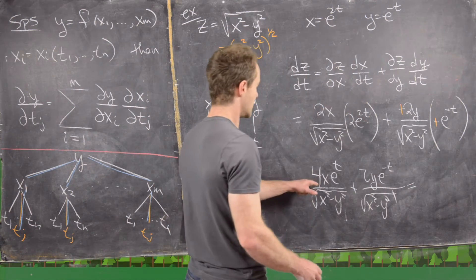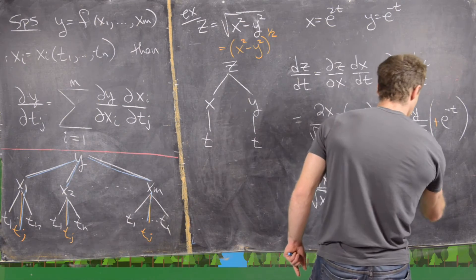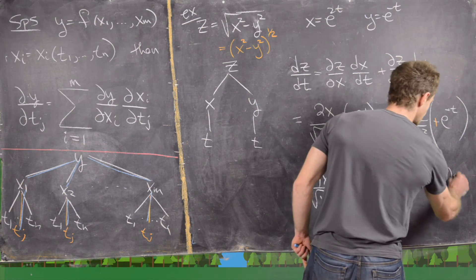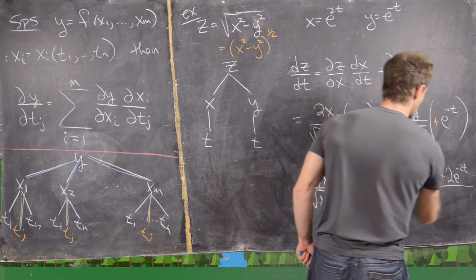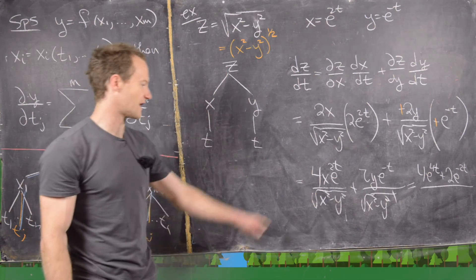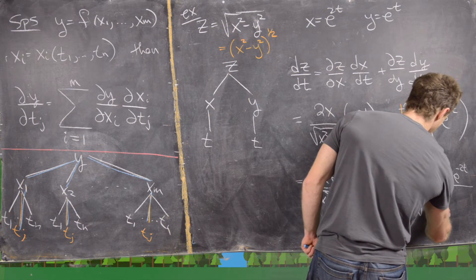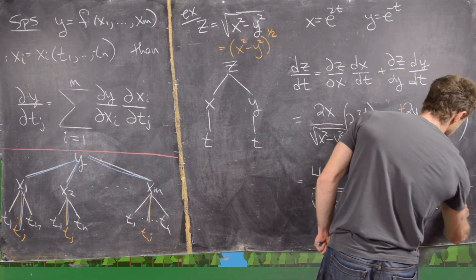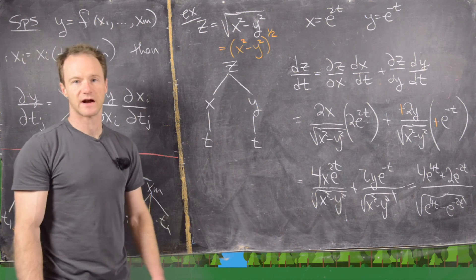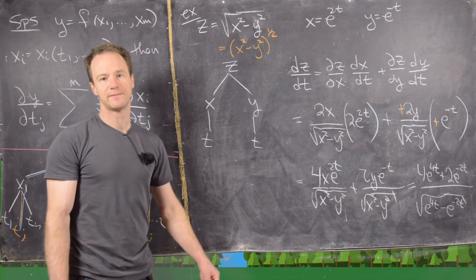Substituting x = e^(2t) and y = e^(−t), the numerator terms become 4e^(4t) and 2e^(−2t), and the denominator becomes the square root of e^(4t) minus e^(−2t). So our final answer is (4e^(4t) + 2e^(−2t)) divided by sqrt(e^(4t) − e^(−2t)). Now I'll clean up the board and do one example with two independent variables.